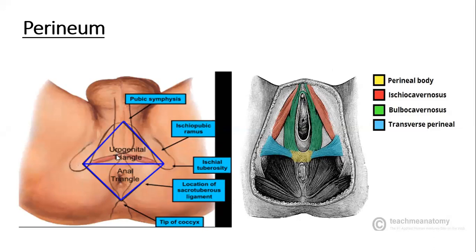Each of these subdivisions is associated with different components of the perineum and their own contents. The anatomical boundaries are: anteriorly the pubic symphysis, laterally the ischial tuberosities, posteriorly the tip of the coccyx, and the roof is the pelvic floor. In terms of surface markings, in females it is the mons pubis anteriorly, in males the base of the penis, laterally the upper inner aspect of the thighs, and posteriorly the superior end of the intergluteal cleft.